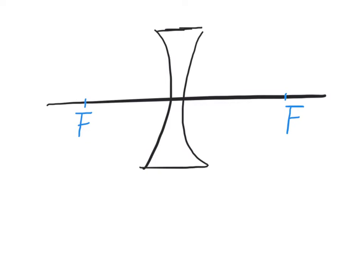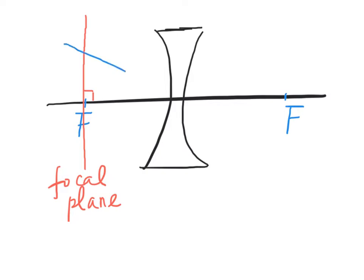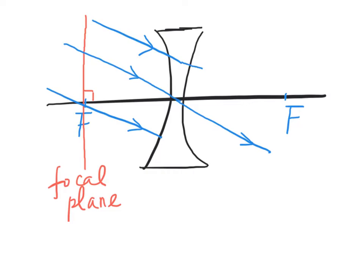For a concave lens, the plane perpendicular to the principal axis and passing through the focus is called the focal plane. When parallel light rays pass through the concave lens, they will refract. By producing the refracted light backward, they will meet at a point on the focal plane. Notice that the light ray passing through the center of the lens will travel in a straight line.